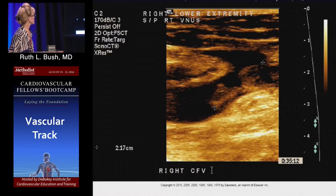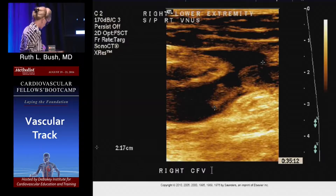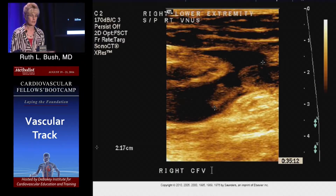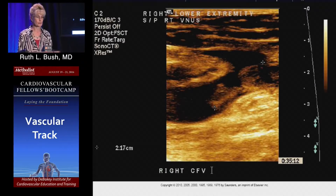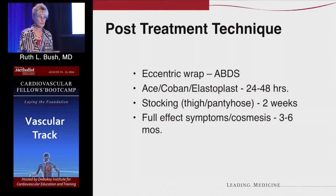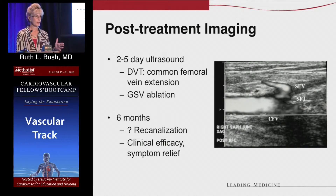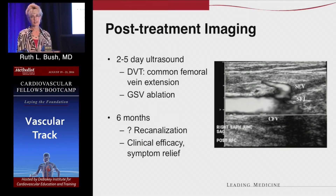After ablation, a post-op ultrasound may show a little tongue of thrombus extending into the main vein. There's a grading system called EHIT — Endovenous Heat-Induced Thrombosis — graded one through four based on how much thrombus is in the deep system. Usually this retracts within a week. I have everyone get an ultrasound scan within the first week of treatment. At six months, there is some recanalization reported in the literature — about four to five percent — but most of these patients are not symptomatic even if they've recanalized.